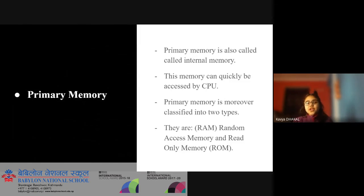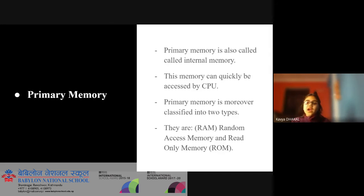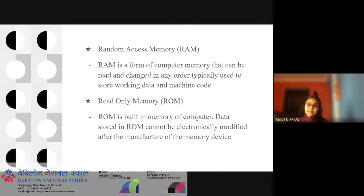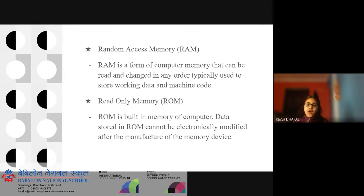Primary memory. Primary memory is also called internal memory. This memory can quickly be accessed by the CPU. Primary memory is classified into two types: RAM — Random Access Memory, and ROM — Read Only Memory. RAM is a form of computer memory that can be read and changed in any order, typically used to store working data and machine code. ROM is built-in memory of the computer. Data stored in ROM cannot be electronically modified after the manufacture of the memory device.